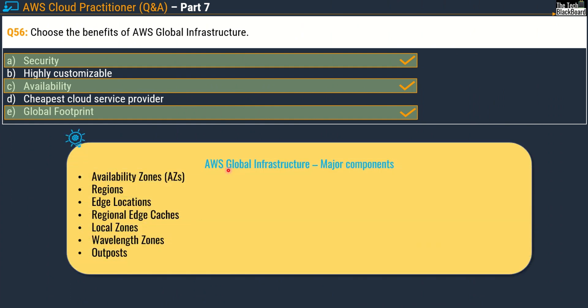The major components of AWS global infrastructure are: availability zones, regions, edge locations, regional edge caches, local zones, wavelength zones, and outposts. There will be many questions on all of these major components in this episode and subsequent episodes. So let's move on to the next question.